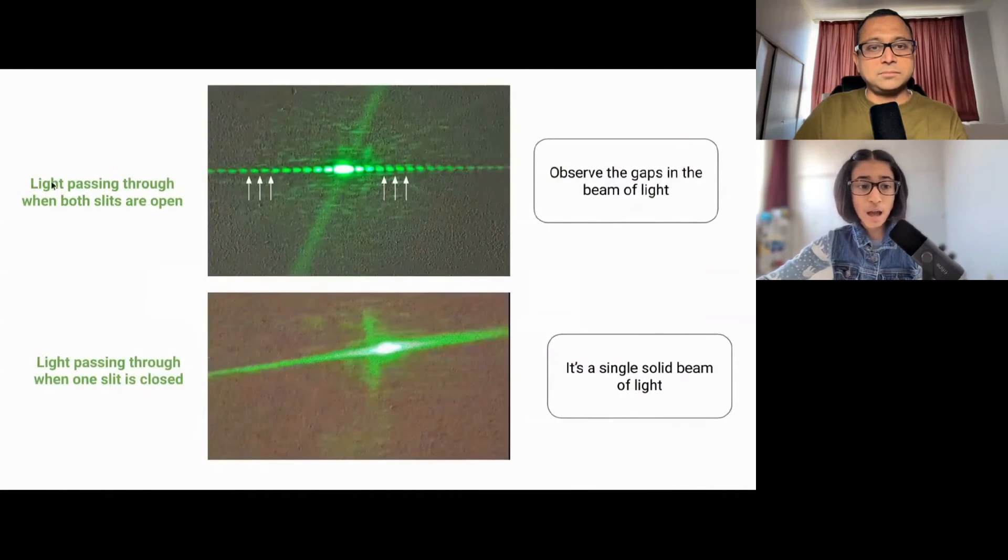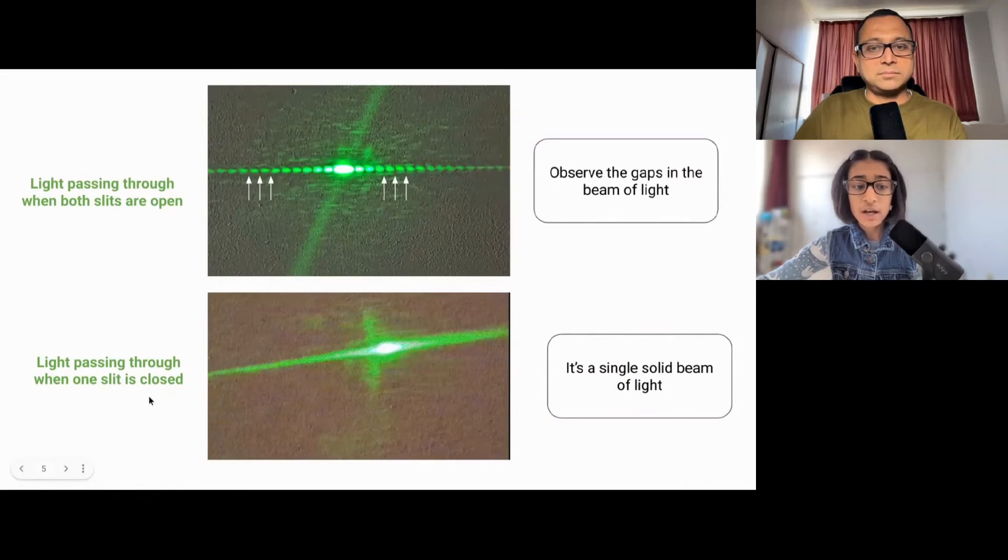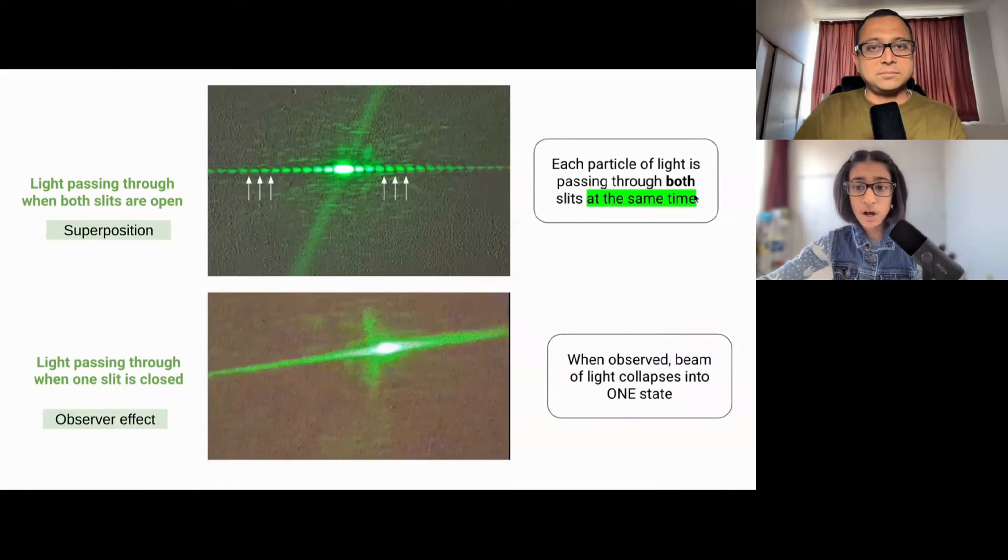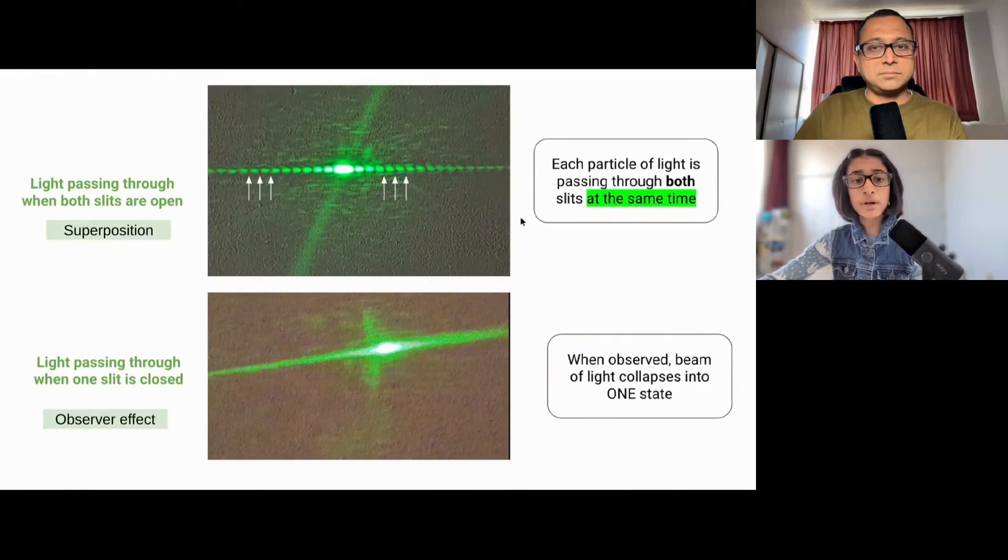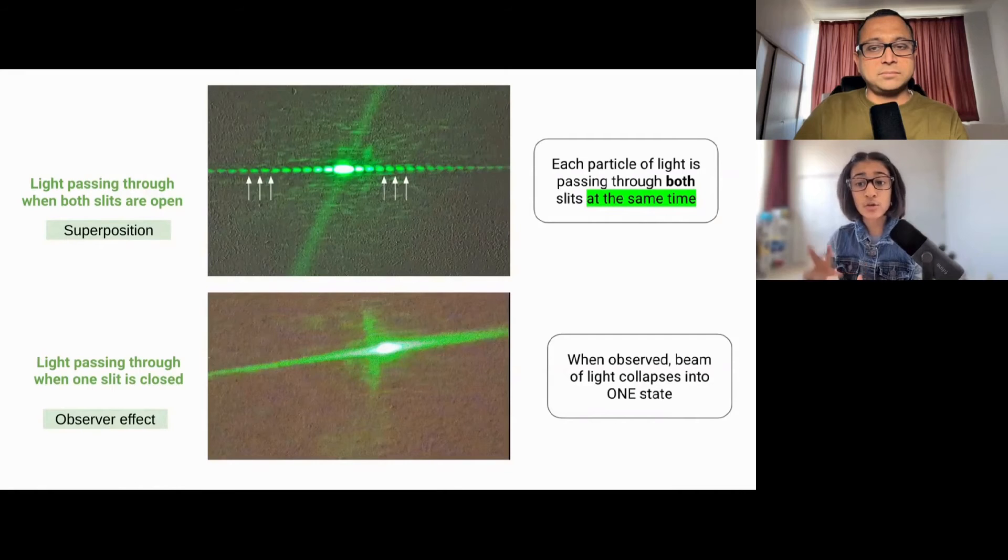So, these gaps are happening when light is passing through when both slits are open. So, observe these gaps in the beam of light. It's the same ones we saw in the video. And then, when it's a single solid beam of light, light is passing through when one of the slits are closed. So, this is happening because each particle of light is passing through both slits at the same time. And remember, in an earlier episode, I mentioned that when you hear the phrase at the same time, it's most likely referring to superposition. Well, in this case, it's referring to superposition. These gaps are because of superposition, because each particle of light is passing through both slits.